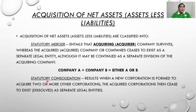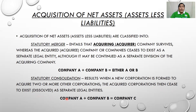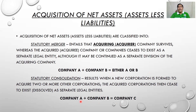For statutory consolidation: it results when a new corporation is formed to acquire two or more other corporations. The acquired corporations then cease to exist as separate legal entities. In the formula: if Company A acquires Company B, a new company — Company C — is formed and remains. Unlike in statutory merger where either A or B remains, in statutory consolidation both A and B disappear and Company C is the surviving entity.